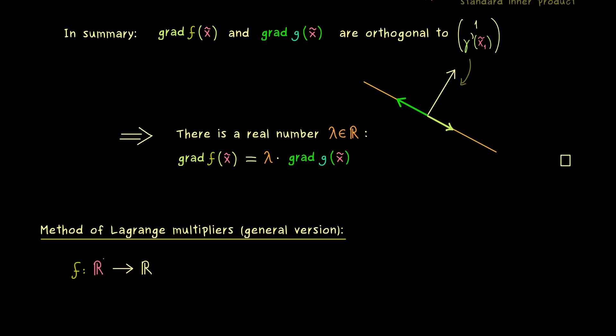The idea here is exactly the same. But now the function f can have n inputs. And then nothing really changes. Just that the constraint g also needs to have n inputs as well. However since in Rⁿ we have much more freedom than just in R², we can also consider more than just one constraint.